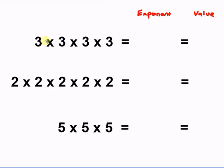Here we have some numbers that are repeated multiplication. Exponents are really just repeated multiplication. So when we say 3 times 3 times 3 times 3, what we're really saying is 3 to the 4th power — notice there are four 3s. So 3 to the 4th power is 3 times 3, which is 9, times 3, which is 27, times 3, which is 81.